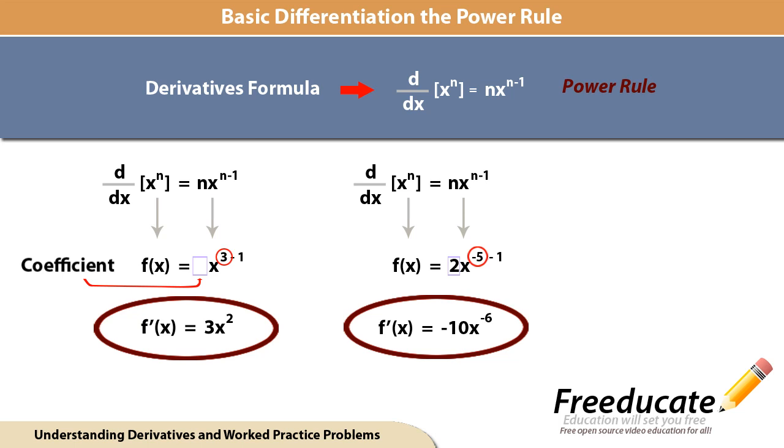So again, very simple concept. I'm going to repeat this one more time: whatever your exponent is, you multiply it by your coefficient—the number out front of the x—then you just subtract off a negative one from your original exponent.